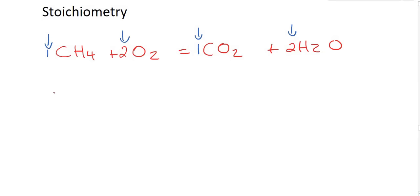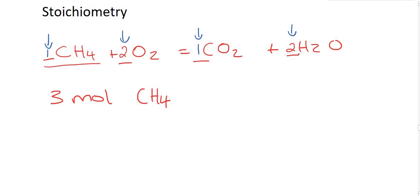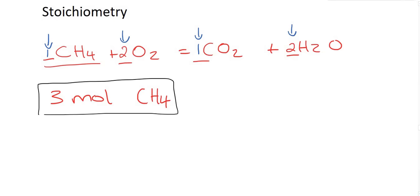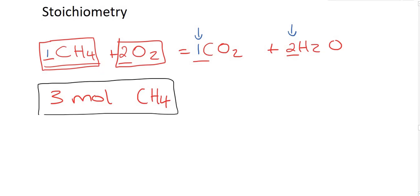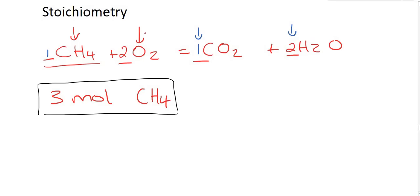For example, if I tell you that we have three moles of CH4, then you can use these ratio numbers — the ones written in front of the molecules — to work out the moles of any of the other ones. If we look at the ratio of CH4 and oxygen, we can see that their ratio is 1 to 2. So for every one CH4 you would have two oxygens. If you have three moles of CH4, then you would have six moles of oxygen.